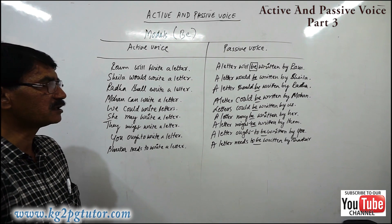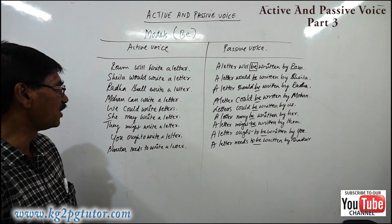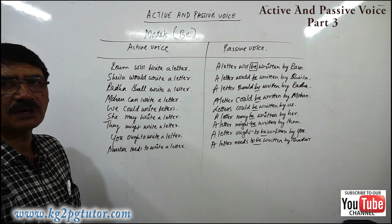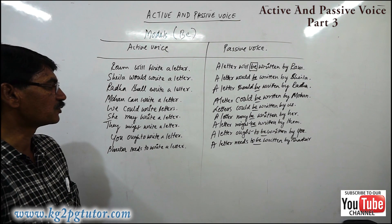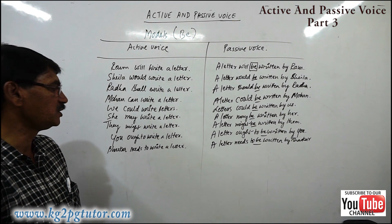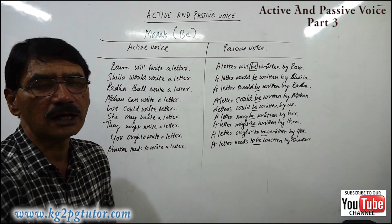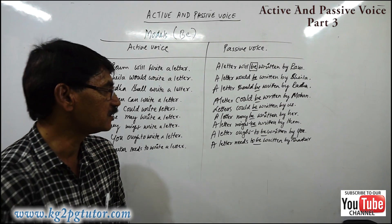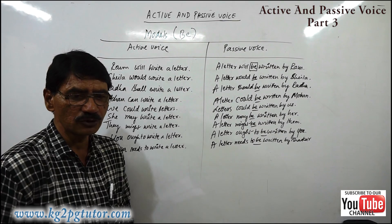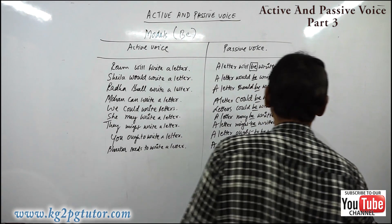She may write a letter. A letter may be written by her. They might write a letter. A letter might be written by them. You ought to write a letter. A letter ought to be written by you. Bhaskar needs to write a letter. A letter needs to be written by Bhaskar. Now I'm going to give you some practice sentences that will give you a clearer picture.